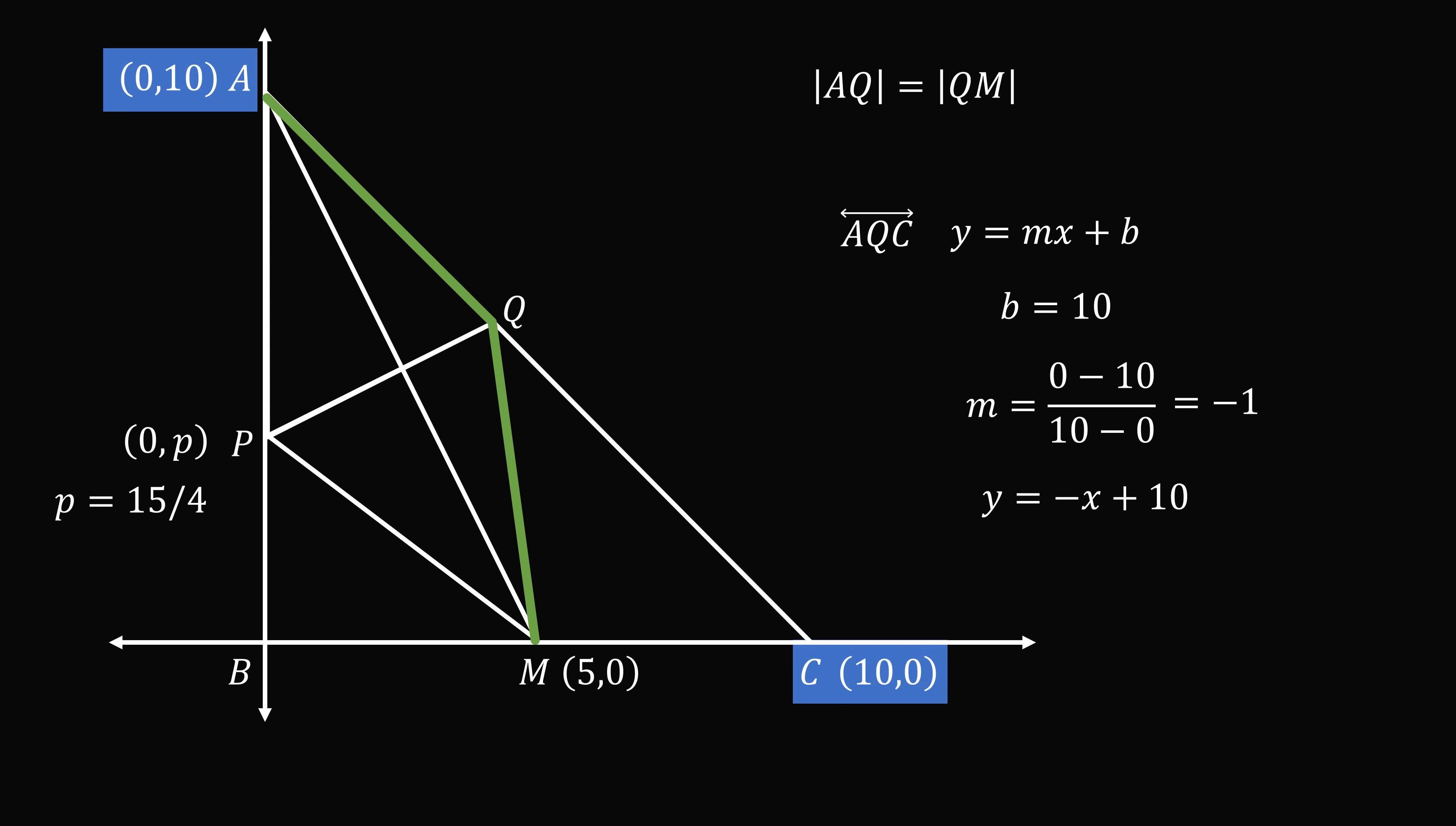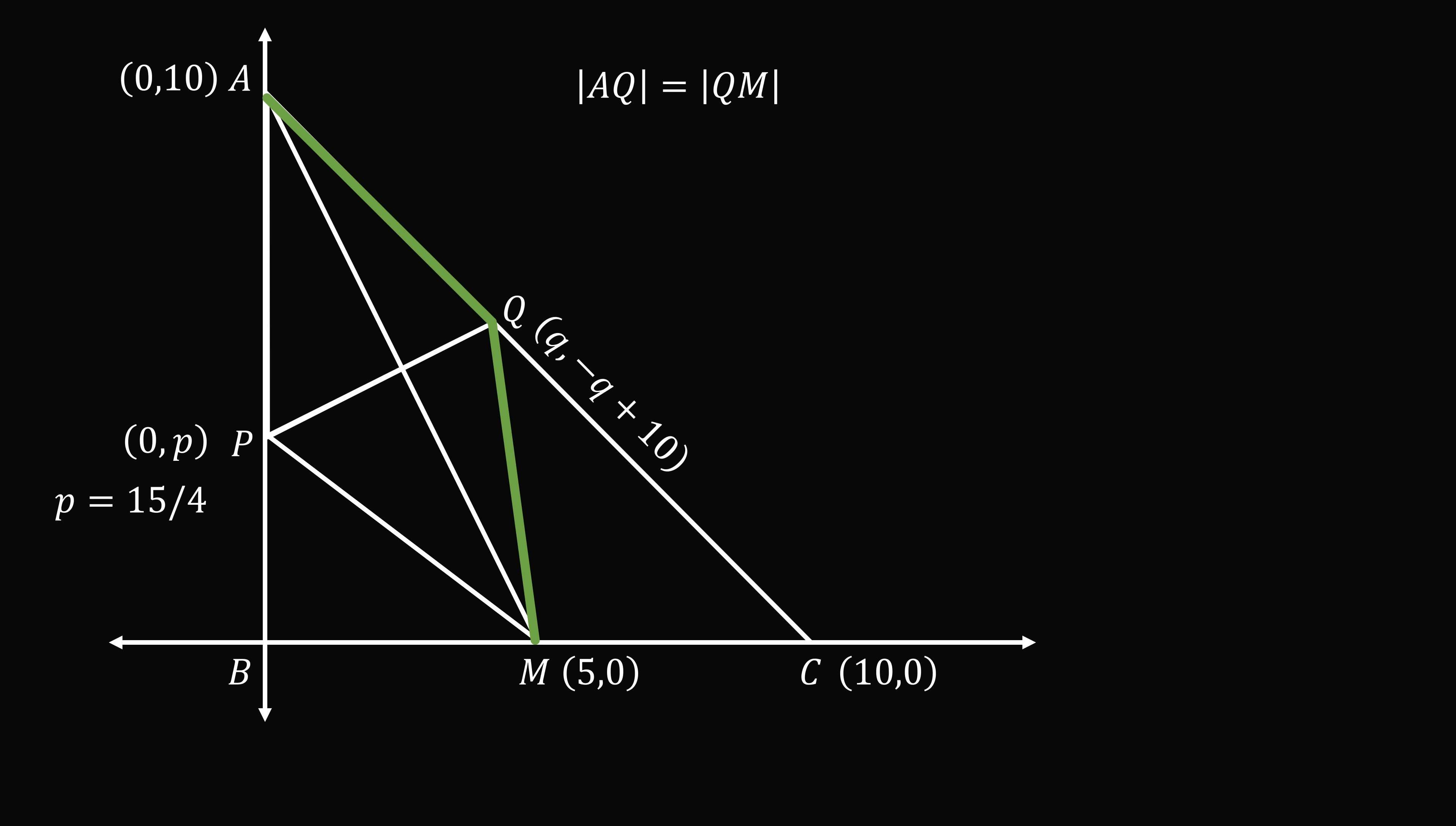So suppose that point Q has an x-coordinate equal to Q, then the y-coordinate will be equal to negative Q plus 10. So now all that remains is to solve for Q. We can do that because we know that AQ is equal to QM in length. Now, rather than working with square roots on both sides, we can work with these square distances. So we have the square of the length of AQ is equal to the square of the length of QM. So we substitute these into the distance formula and squaring both sides. Now we just carefully simplify. We can eliminate terms and we get that Q is equal to 25 over 6. That's the x-coordinate. The y-coordinate will be negative Q plus 10. So that equals 35 over 6. So we figured out the coordinates of point Q.